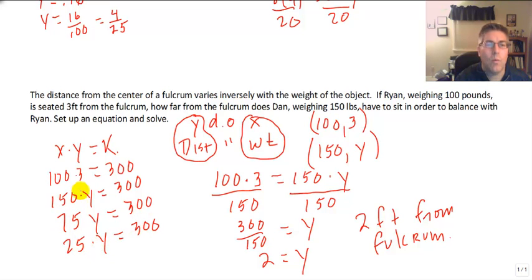So no matter what the weight is, we know to solve for the distance, the weight times the distance must always equal 300. That's one way to tell something is an inverse variation. So that wraps up the concept of inverse variation. And we will see you in class.